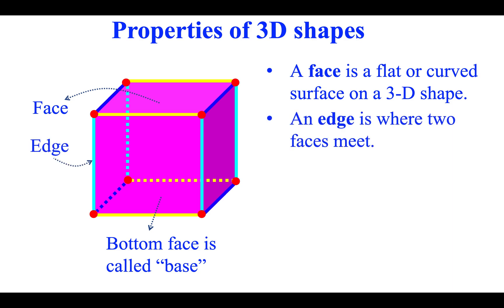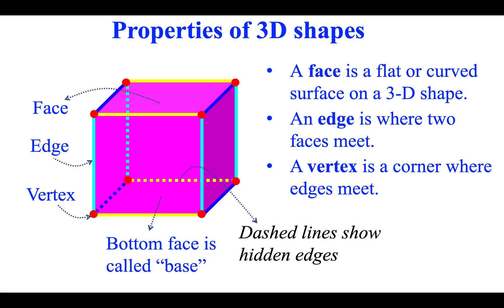Edge. An edge is where two faces meet. Vertex. A vertex is a corner where edges meet. Dashed lines show hidden edges.